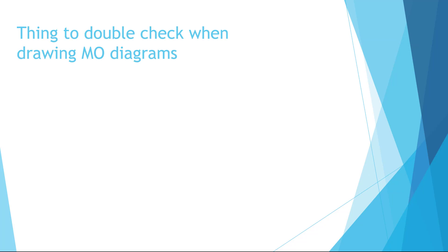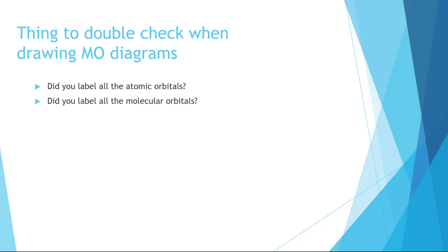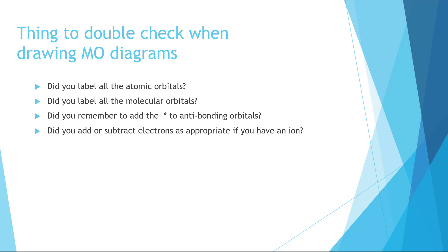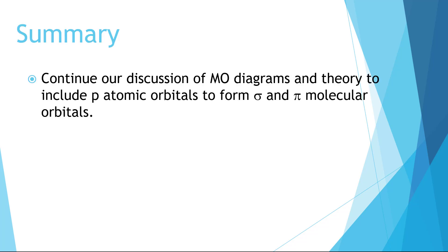Here is a quick checklist to help prevent errors when drawing MO diagrams: Did you label the atomic orbitals on the sides? Did you label all the molecular orbitals? Did you remember to add the star to anti-bonding orbitals? Did you add or subtract electrons as appropriate if you have an ion? Did you use the proper orbital ordering for your MO diagram? We've now extended our discussion to include p atomic orbitals forming sigma and pi molecular orbitals, covered energy level ordering, filling order, and common mistakes for second-row homonuclear diatomics.